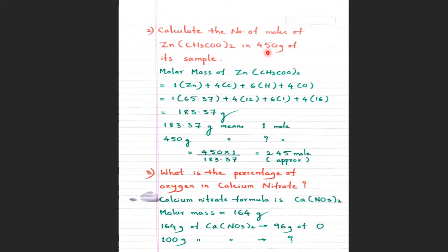So 183.37 grams = 1 mole of zinc acetate. Now, 450 grams = 450 × (1/183.37) moles. You are not allowed to use any calculator or electronic gadgets — this is per CBC guidelines. Using the four fundamental mathematical operations (addition, subtraction, multiplication, division), the answer is approximately 2.45 moles. Do not write more than two or three decimal places.